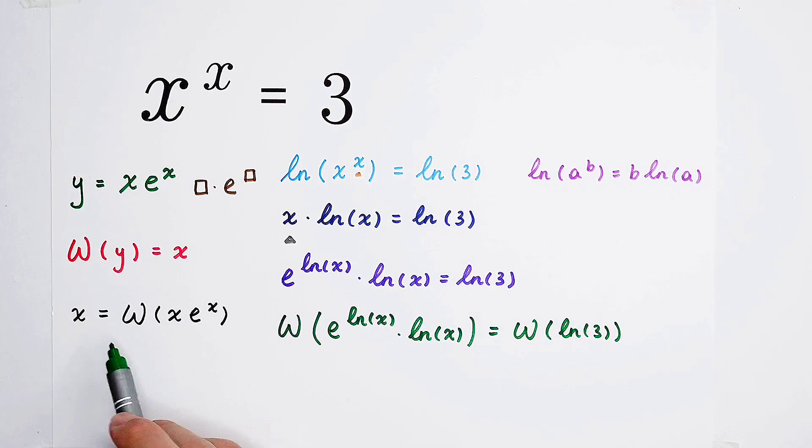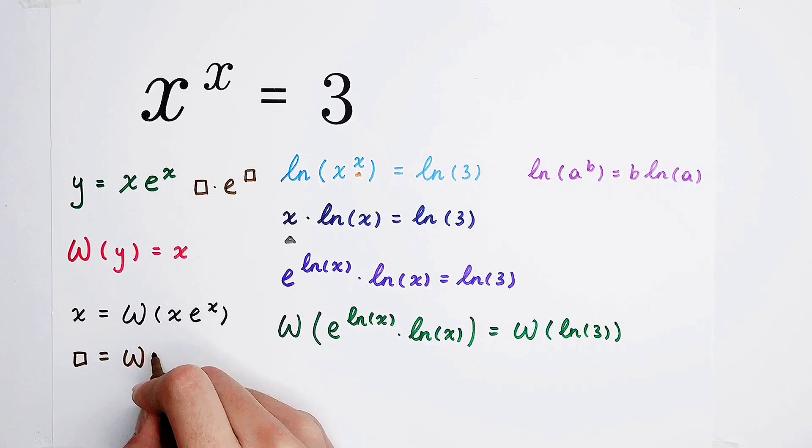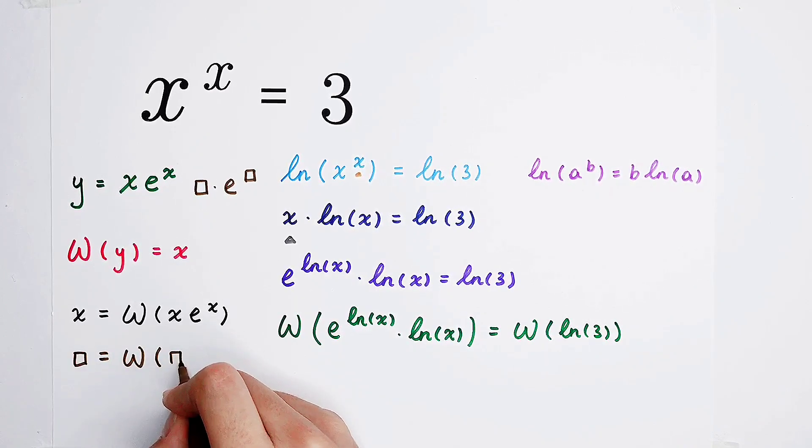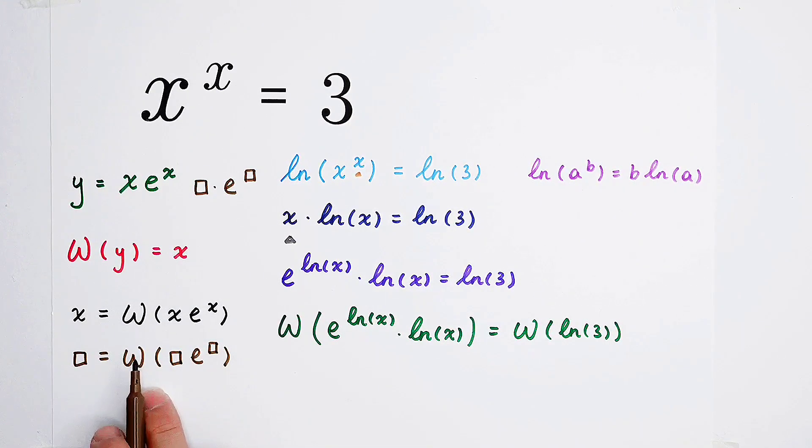Because x equals W of x times e to the power of x, that means this something is equal to the W of this something times e to the power of something. And we know that this something is natural log of x. So the left side is the natural log of x.